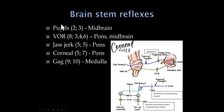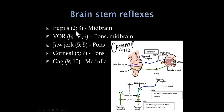All these brainstem reflexes are very important in a comatose patient. The pupillary light reflex assesses cranial nerves 2 and 3 and the midbrain. The vestibulo-ocular reflex uses the eighth nerve and assesses cranial nerves 3, 4, 6, and the MLF — telling us about the pons and midbrain. The jaw jerk reflex (tap on the jaw, it should snap up) is cranial nerve 5 in and out, and also assesses the pons.